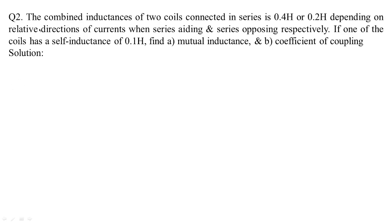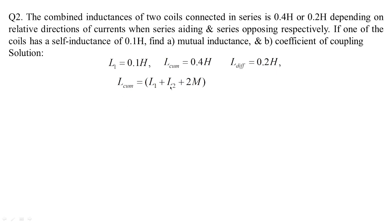The next numerical: the combined inductances of two coils in series is 0.4 H or 0.2 H depending upon the relative directions of currents — series aiding and series opposing respectively. If one of the coils has a self inductance of 0.1 H, we need to find the mutual inductance and coefficient of coupling. So L1 = 0.1 H, the cumulative value is 0.4 H, and the differential value is 0.2 H. We label these as equations 1 and 2.